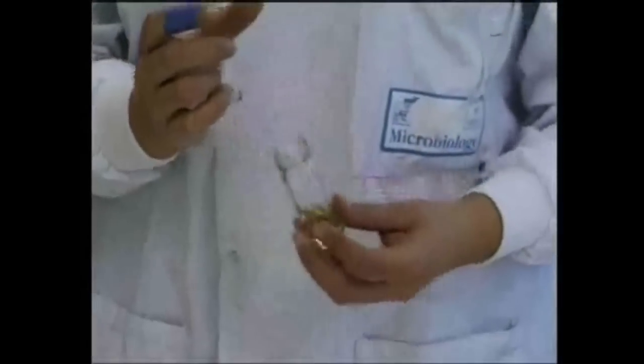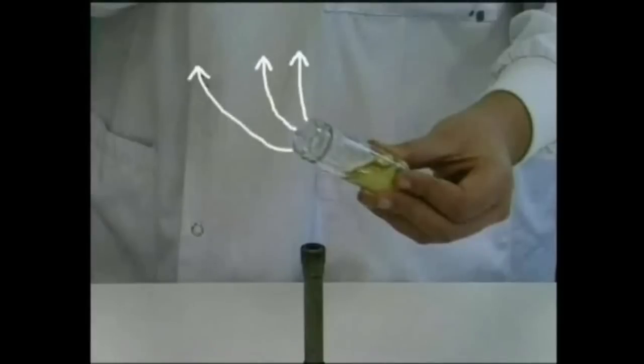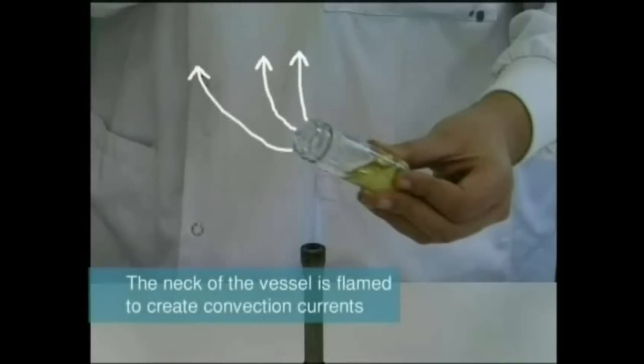Bottles and other containers are always flamed by holding the neck briefly in the flame. This does not sterilize, but creates convection currents around the neck which lift the air out and remove any microorganisms suspended in the air around the top of the container. This helps reduce contamination.